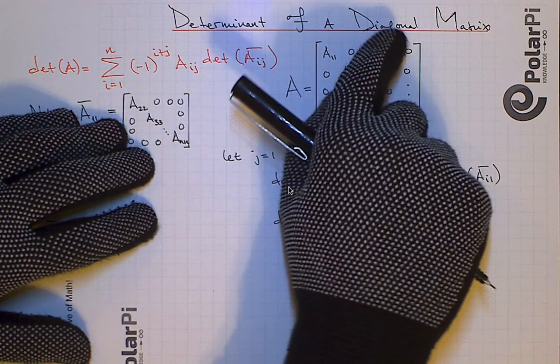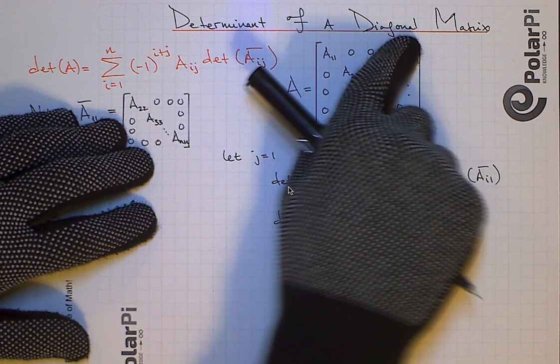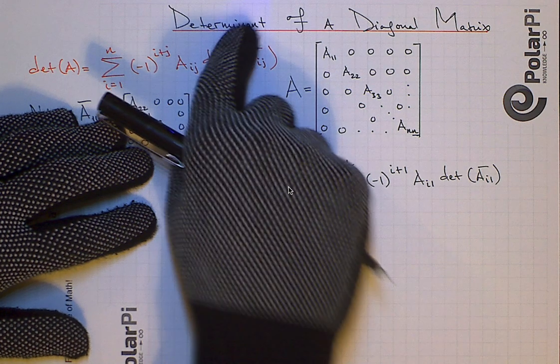Hey guys, welcome. So in this video I'm going to show you that a diagonal matrix has a simple determinant formula and we're gonna derive this formula.